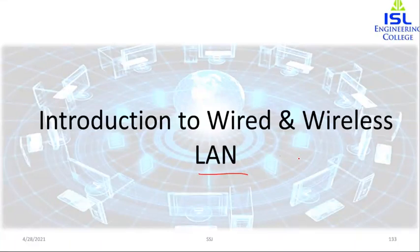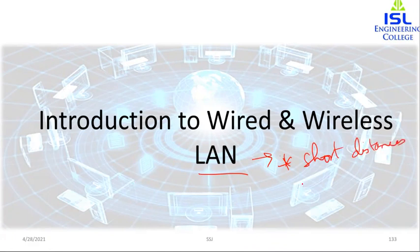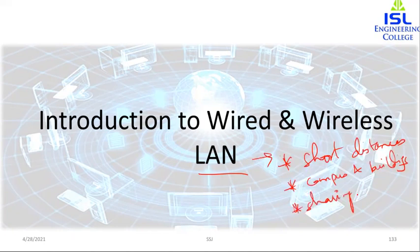A LAN can be used as an isolated network to connect computers in an organization for sharing resources. Most LANs today are also linked to the wide area network or the internet. So we have to remember that it is for short distances, used in campus and office buildings, and it is useful for sharing of resources. LAN itself will be connected to WAN.